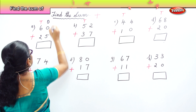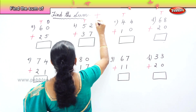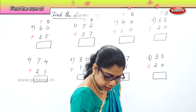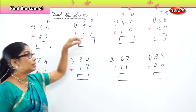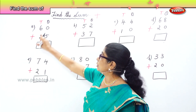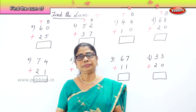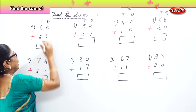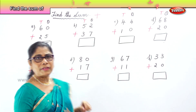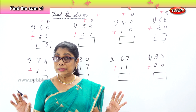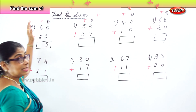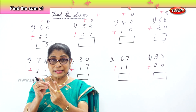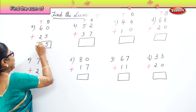Now find the sum of 60 and 25. Let's look at the ones place. You have 0 in the ones place and 5 in the ones place. Any number plus 0 is the number itself, so 5 plus 0 is 5. We must remember that. Now we go to the tens place. In the tens place we have 6 tens and 2 tens. 6 plus 2 is 8, so you have 8 tens.